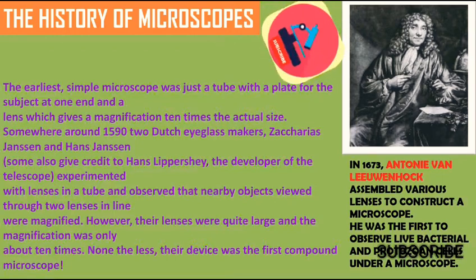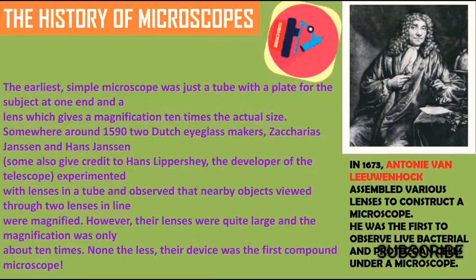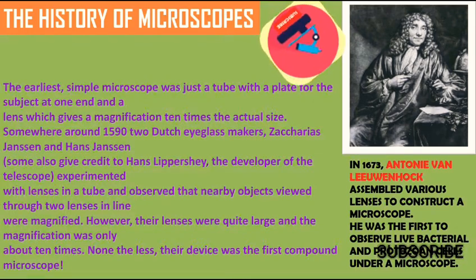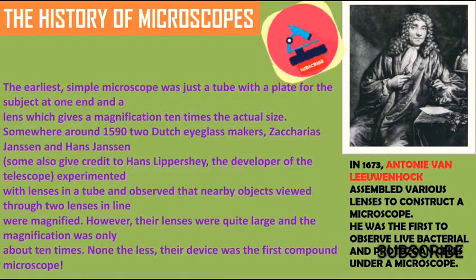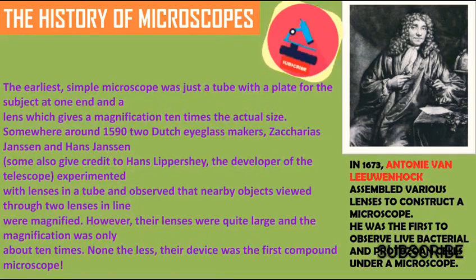In 1673, Antony van Leeuwenhoek assembled various lenses to construct a microscope. He was the first to observe live bacterial and protozoan cells under a microscope.